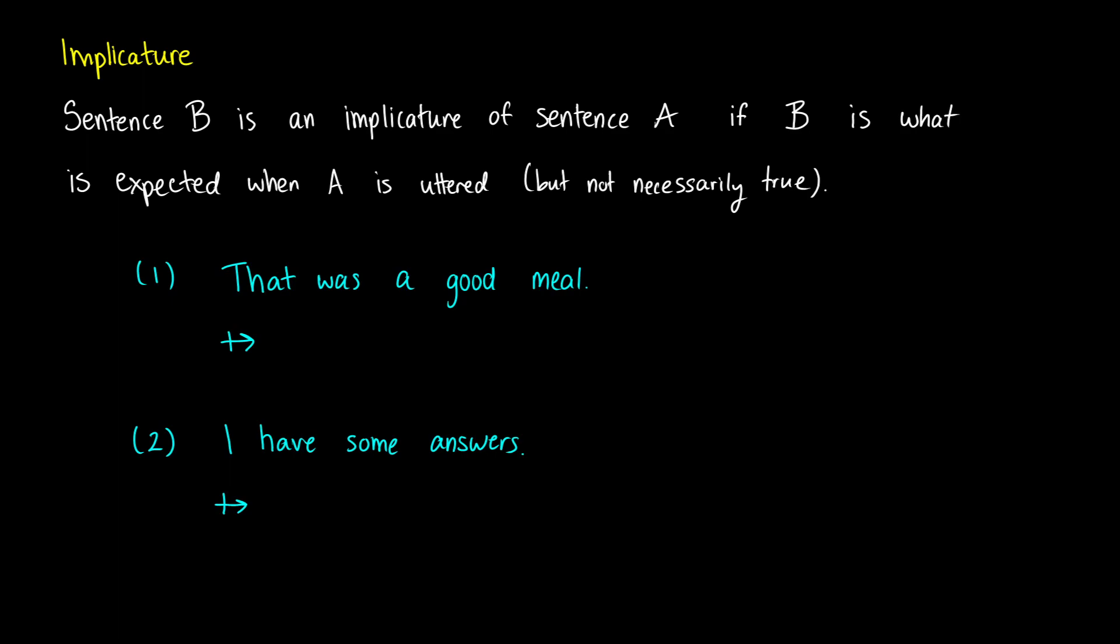Implicature is about what we expect when someone says something. It's an inference that might not always be true, but based on our understandings of conversational norms and what people mean to say, we believe that it's likely true.